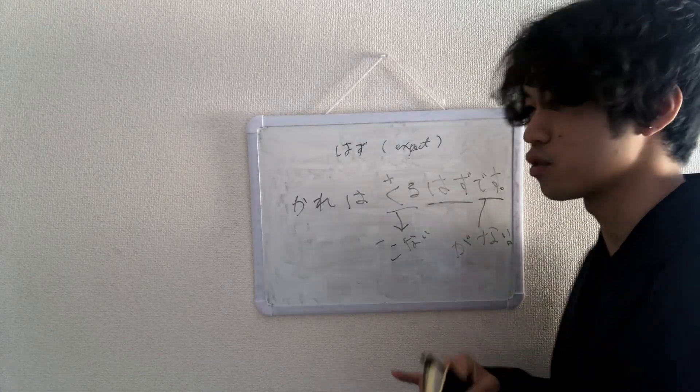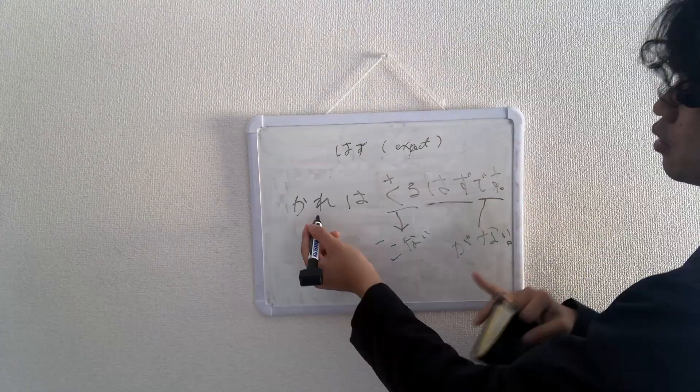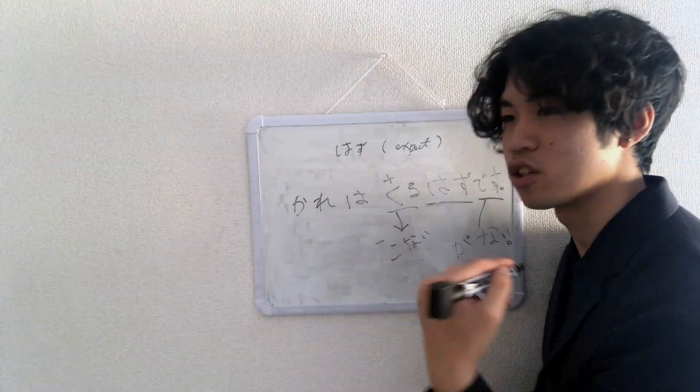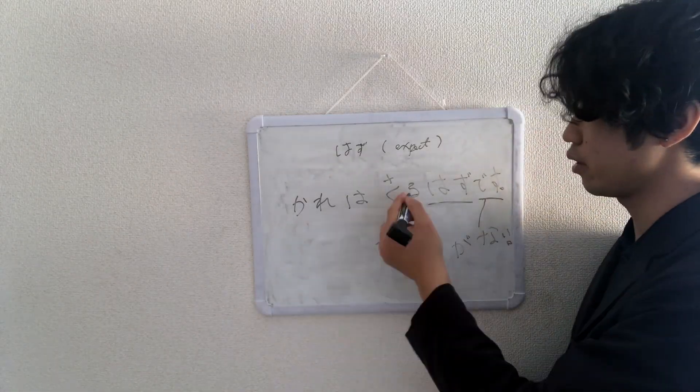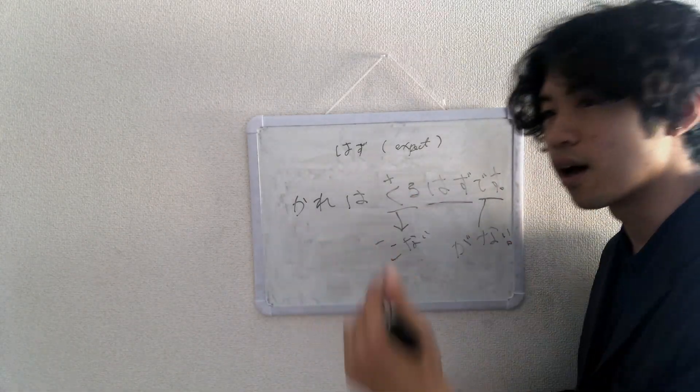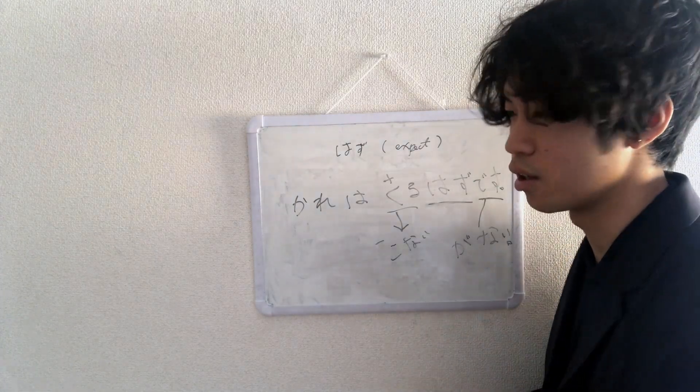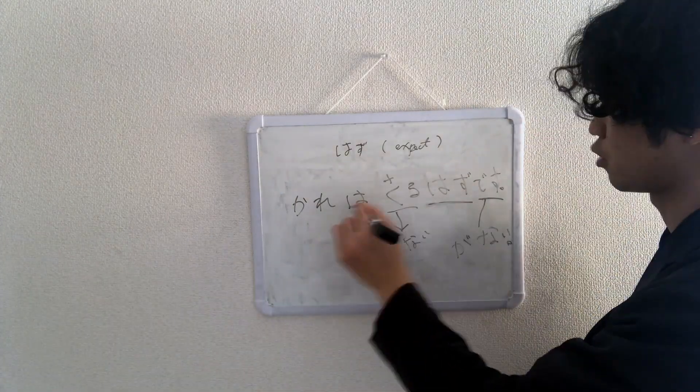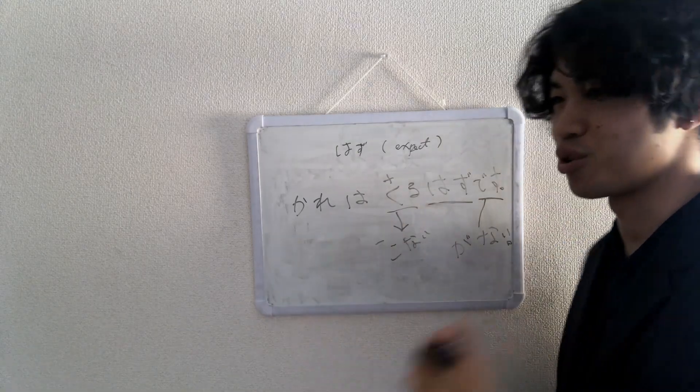If you need to compare, feel free to pause the video and go back. 彼は来ないはずです, I don't expect him to come. Versus 彼は来るはずがない, he can't come, there's no way he would come. So 来るはずがない, this latest sentence is stronger.